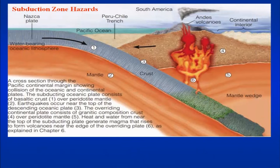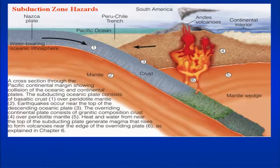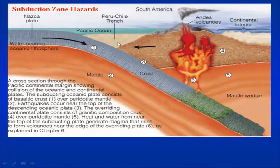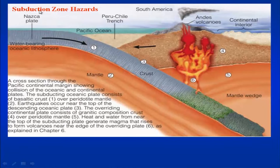Coming to the subduction zone — previously we covered the mid-oceanic centers, the mid-Atlantic ridge, the triple junction, and the splitting up of the island. Now, this is the part of the subduction zone where one plate is subducting below another. The example shown is between the oceanic plate and the continental plate, where the oceanic plate is subducting below the continental plate, giving rise to volcanic eruptions on the surface. The example shown is between the Nazca plate and the South American plate.